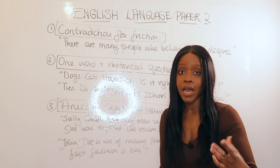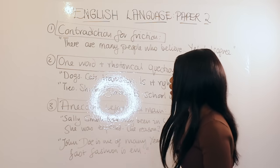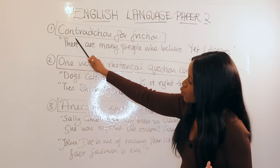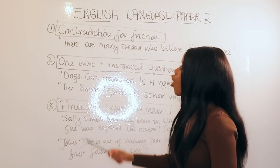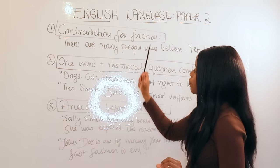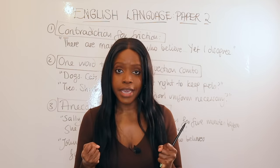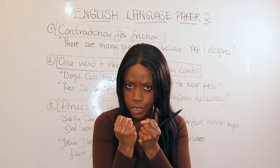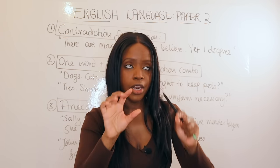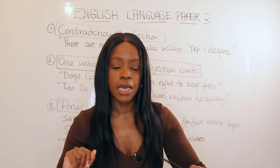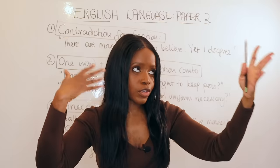This applies equally to a letter, article, or speech. The first method is what I call contradiction for friction. Our brains are usually hardwired to respond to some kind of friction or negativity. So when you're given a statement and you decide, okay, I'm going to agree with it — say for instance you're agreeing that fast fashion is evil — what you do is start by presenting the counter perspective.